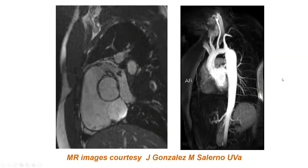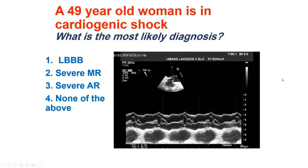Here's an example of coarctation in a different patient. Next case: a 49-year-old woman in the cath lab in cardiogenic shock. This is an M-mode echocardiogram through the aortic valve. The question is: what is the most likely diagnosis? Choices are left bundle branch block, severe mitral regurgitation, severe aortic regurgitation, or none of the above. This envelope is very different from the normal aortic valve parallelogram shape.